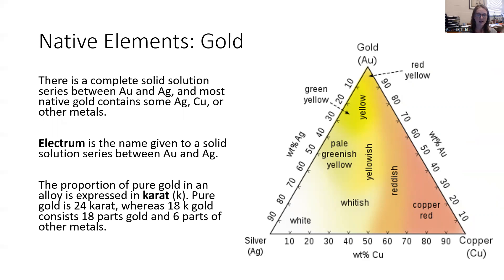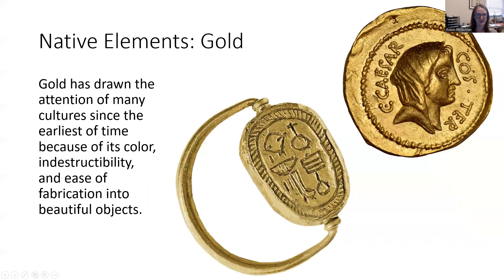Anything less than 24-carat means it's not pure gold — it's mixed with something else, probably silver or copper. White gold is white because it's mixed with silver; rose gold is rose-colored because it's mixed with copper. Electrum is the name given to a solid solution series between gold and silver, so white gold could actually be electrum. Gold has drawn the attention of many cultures since earliest times because of its color, its shine, and the fact that it's fairly indestructible and easy to work with — it has a low melting temperature so you can melt, form, and mold it.